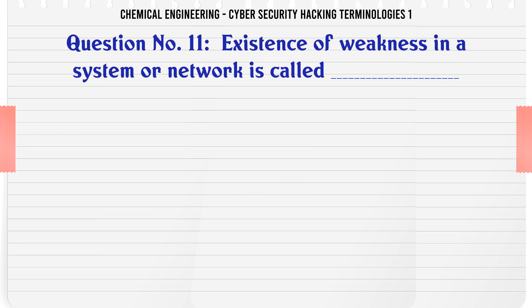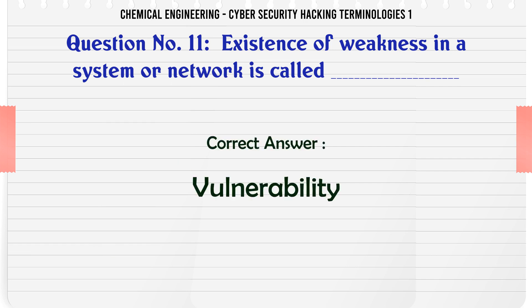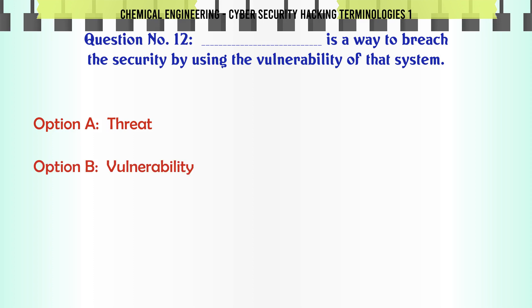Existence of weakness in a system or network is called A. Threat B. Vulnerability C. Exploit D. Attack. The correct answer is Vulnerability.